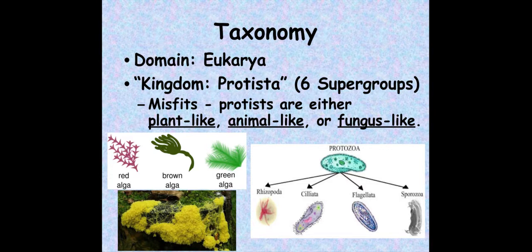We divide our taxonomy into supergroups, in between domain and kingdom, and there are six of those. We're going to be focusing on the algae today, so we won't focus on every supergroup. And again, as we said, they are the misfits — you can have a plant-like protist, an animal-like protist, or a fungus-like protist. Today, plant-like only.